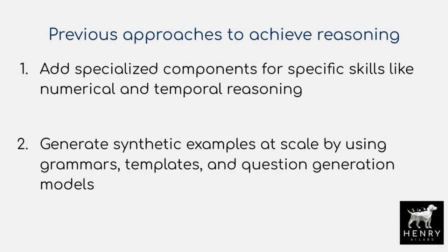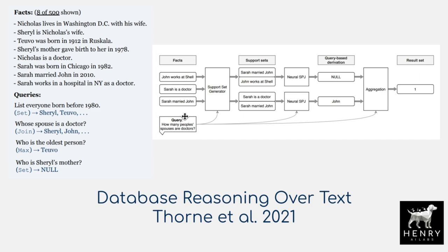There are two camps for adding reasoning skills to current deep learning systems. The first is to add specialized components for specific skills like numerical and temporal reasoning, where the neural network System 1 model parses the scene and fills out a table, and then a symbolic language aggregates the results. A recent example shows a neural system generating a table with a symbolic aggregation language for database reasoning over text — answering questions like 'list everyone born before 1980,' which would be very hard for a language model alone.